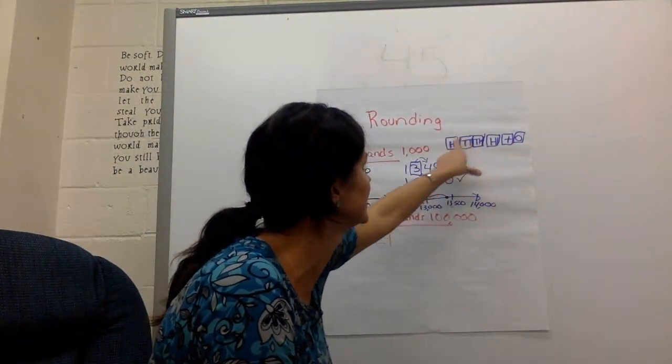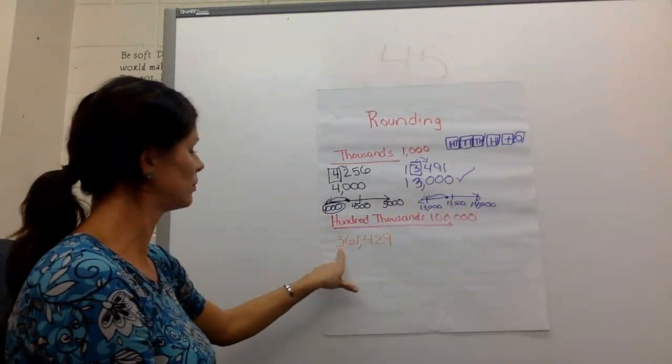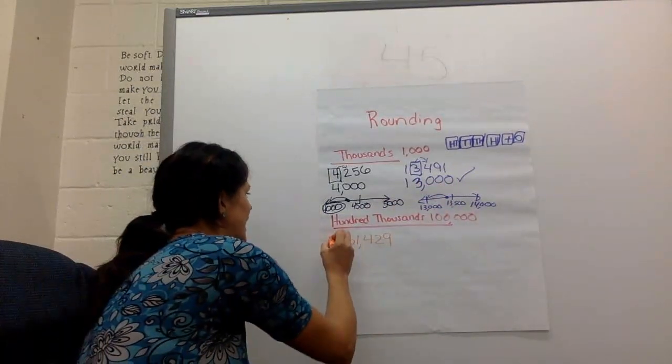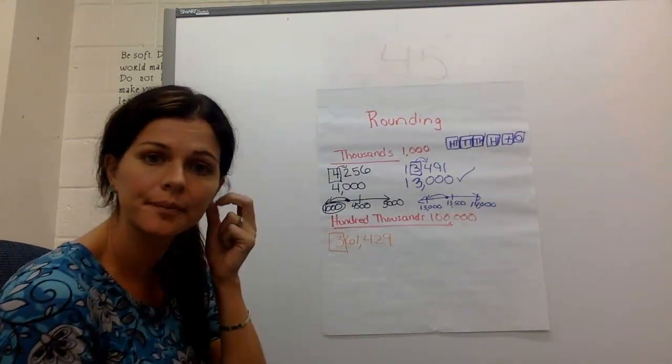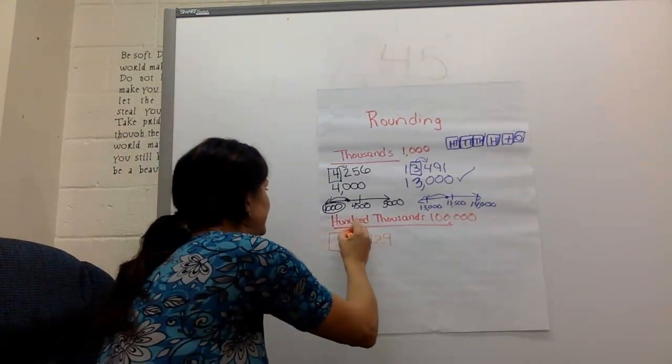I'm going to look at my little cheat sheet over here. Ones, tens, hundreds, thousands, ten thousands, hundred thousands. Oh, that means the 3 is in the hundred thousands. I draw the box around the 3. I look next door.